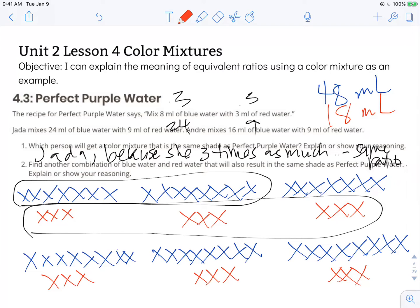The objective states I can explain the meaning of equivalent ratios using a color mixture as an example. As long as we make the same change to both parts of the recipe, we will create an equivalent ratio and we will create an equivalent color mixture that has the same shade. So if we double something, one part of the recipe, we have to double the other part of the recipe.